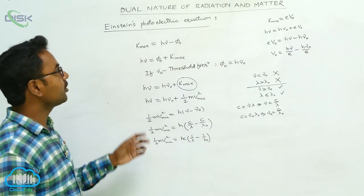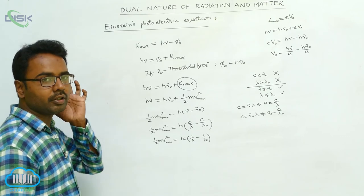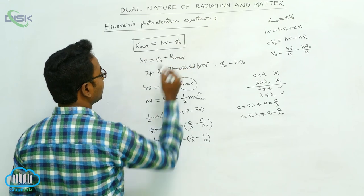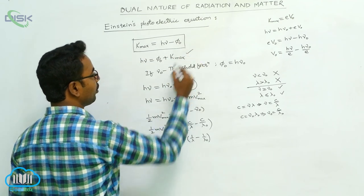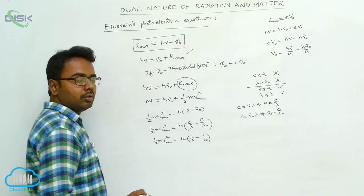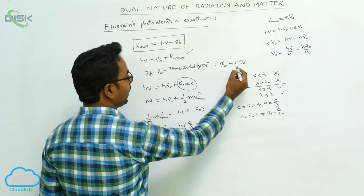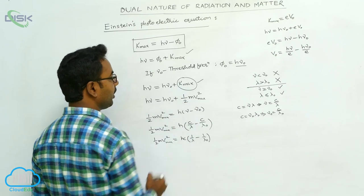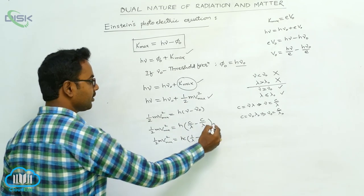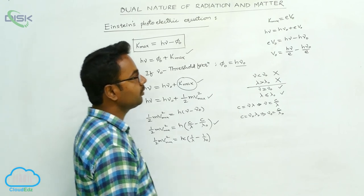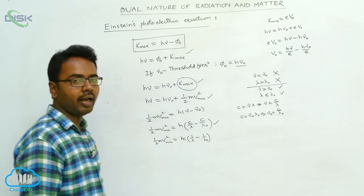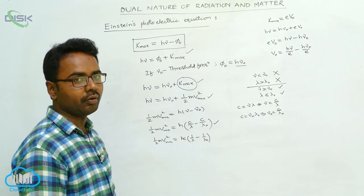The fundamental form of Einstein's photoelectric equation is K_max = hν − φ₀, which can also be written as hν = φ₀ + K_max. The work function φ₀ can be written as hν₀. It can also be expressed in terms of wavelengths as ½mv²_max = hc(1/λ − 1/λ₀), and in terms of stopping potential as eV₀ = h(ν − ν₀). These are the various forms of Einstein's photoelectric equation.